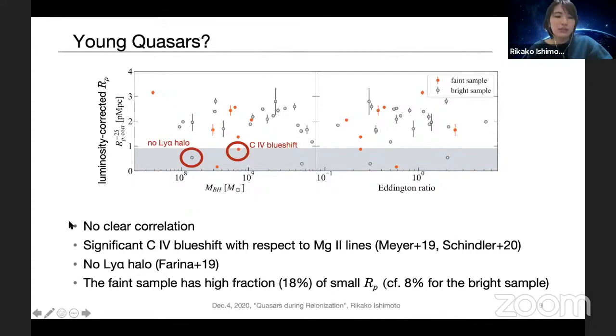And interestingly, our faint sample has higher fraction of small proximity zone than that of bright sample, but larger sample is needed for clear conclusion.